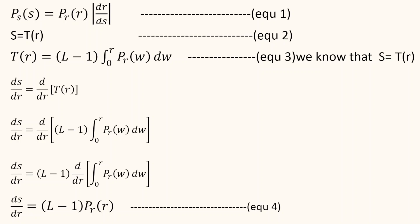We know that the general transformation function is S = T(R) — let us name it equation 2. We choose a transformation operator T(R) = (L-1) × integral from 0 to R of PR(W) dW, where W is a dummy variable used for integration. To find dr/dS from equation 2, we differentiate both sides with respect to R and get dS/dr = d/dr of T(R). Substituting the transformation function, we get dS/dr = d/dr of (L-1) × integral from 0 to R of PR(W) dW. Since differentiation and integration over a single variable cancel, we get dS/dr = (L-1) × PR(R).